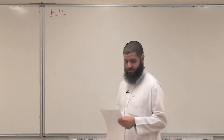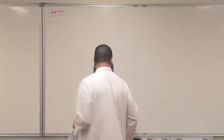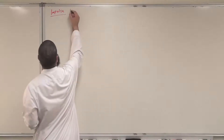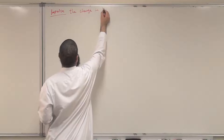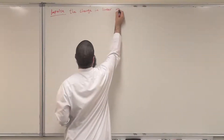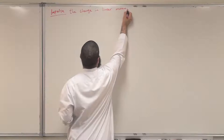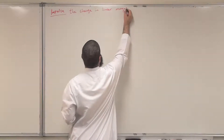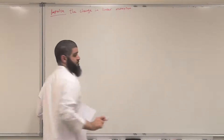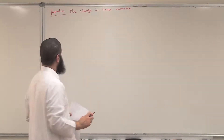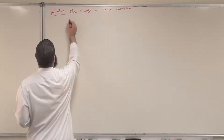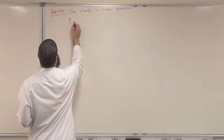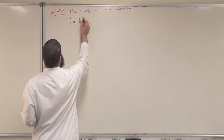Bismillah ar-Rahman ar-Rahim. Let us now introduce a new concept which is called the impulse. We define the impulse to be the change in linear momentum. The symbol we use for impulse is capital J, and the change in linear momentum is just delta P.